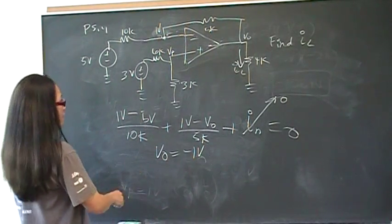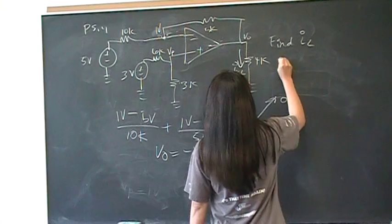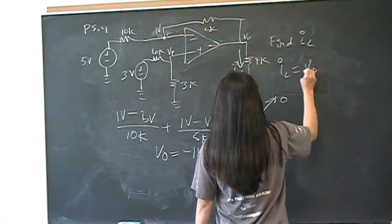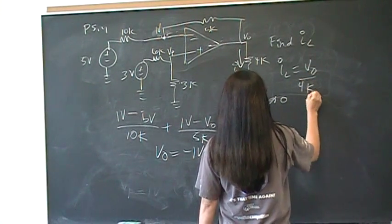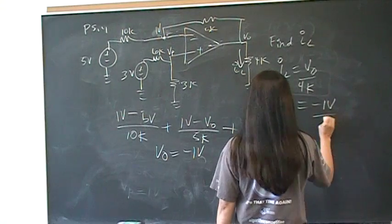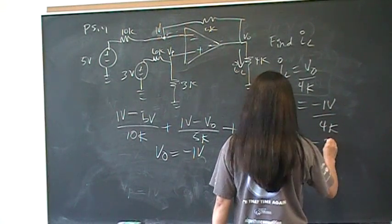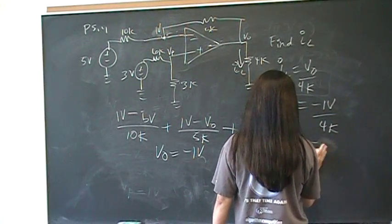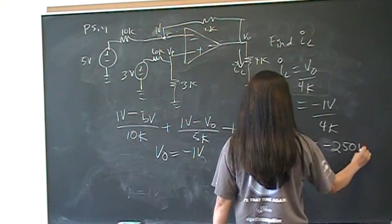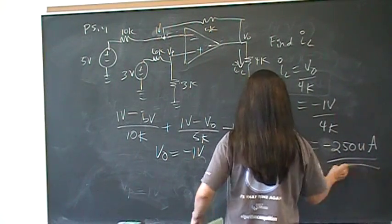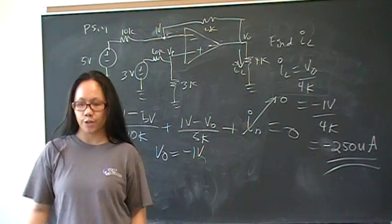Now we know what Vout is, so we can find IL. IL equals Vout over 4k, which equals negative 1 volt over 4k, which equals negative 250 microamps. And that is the answer.